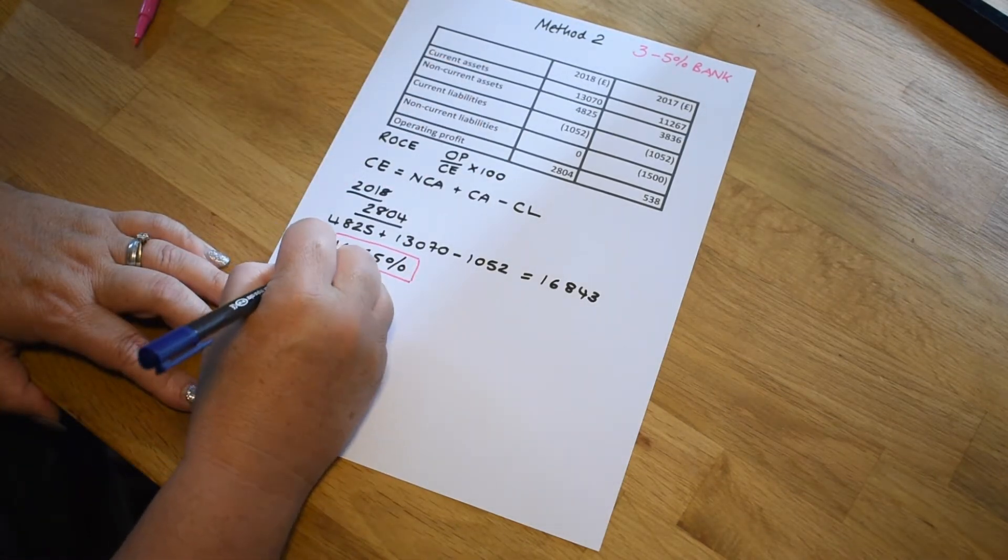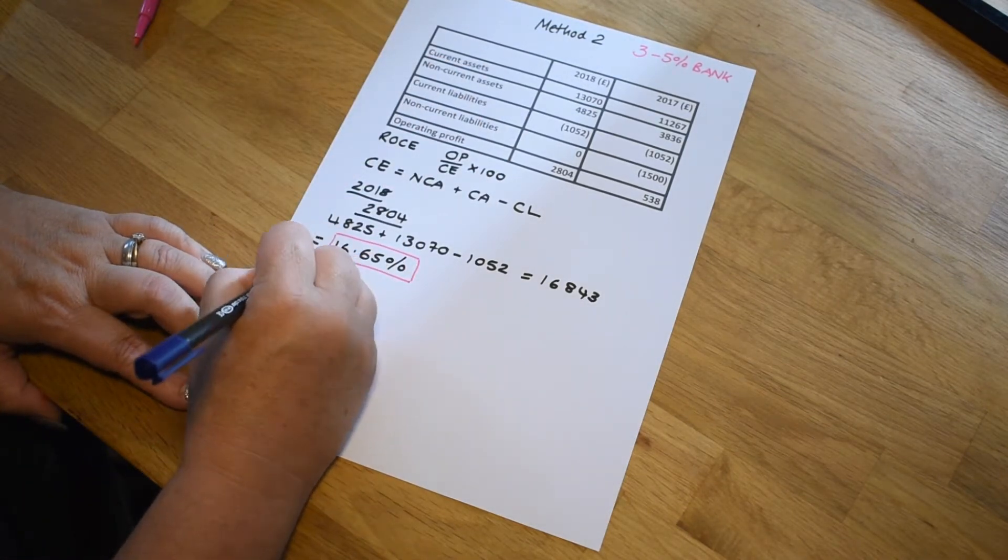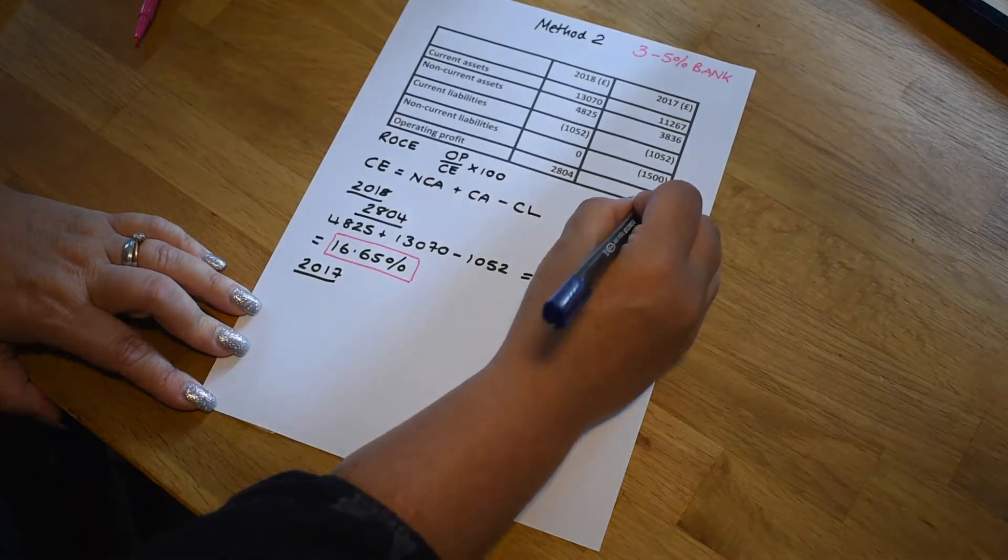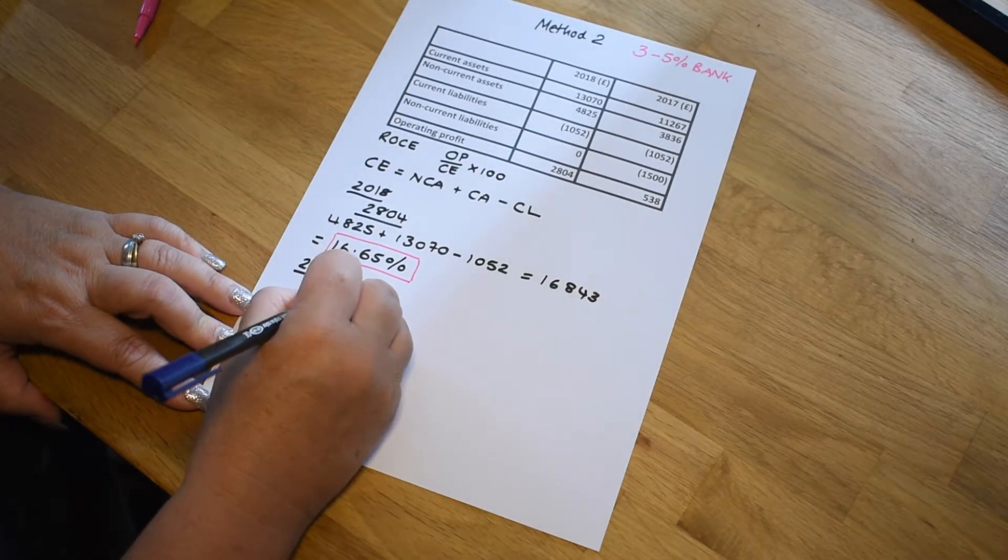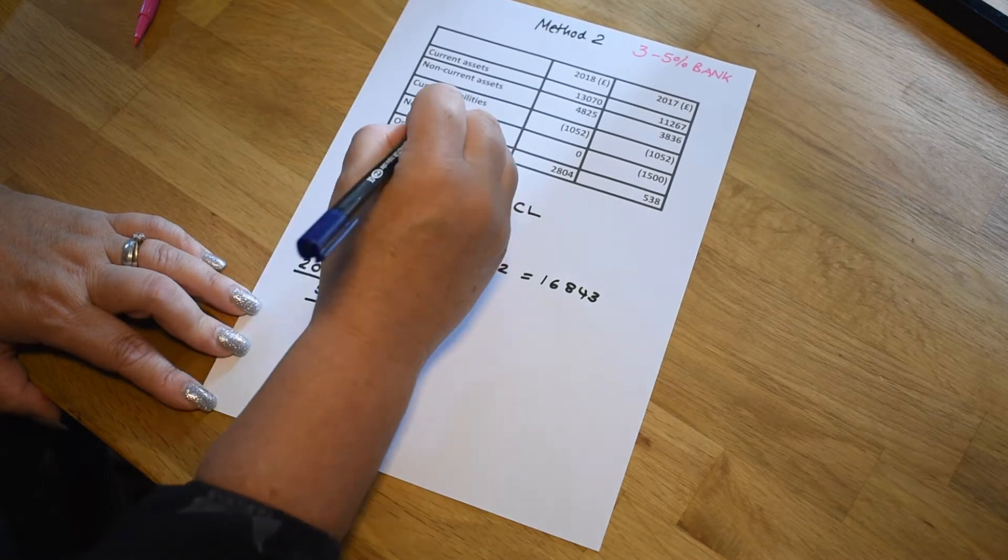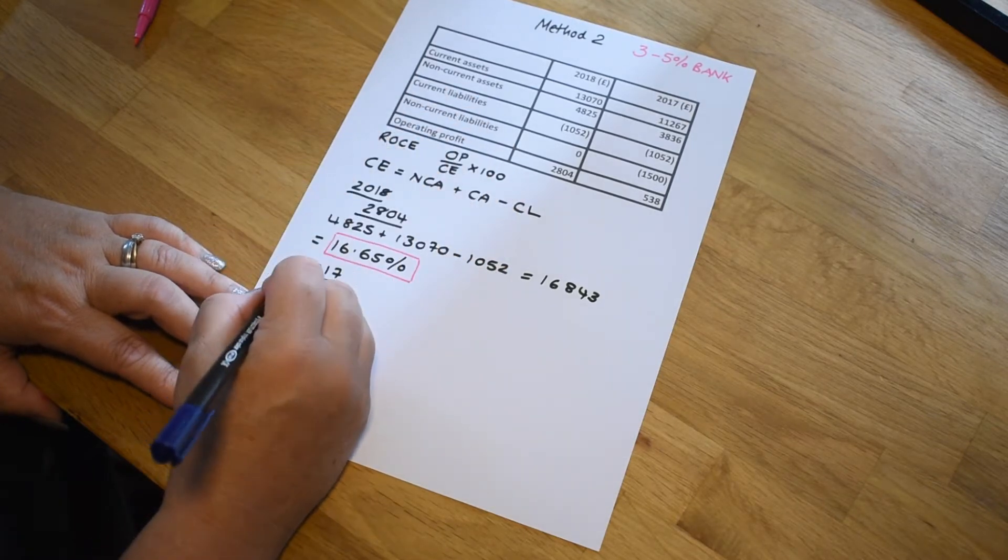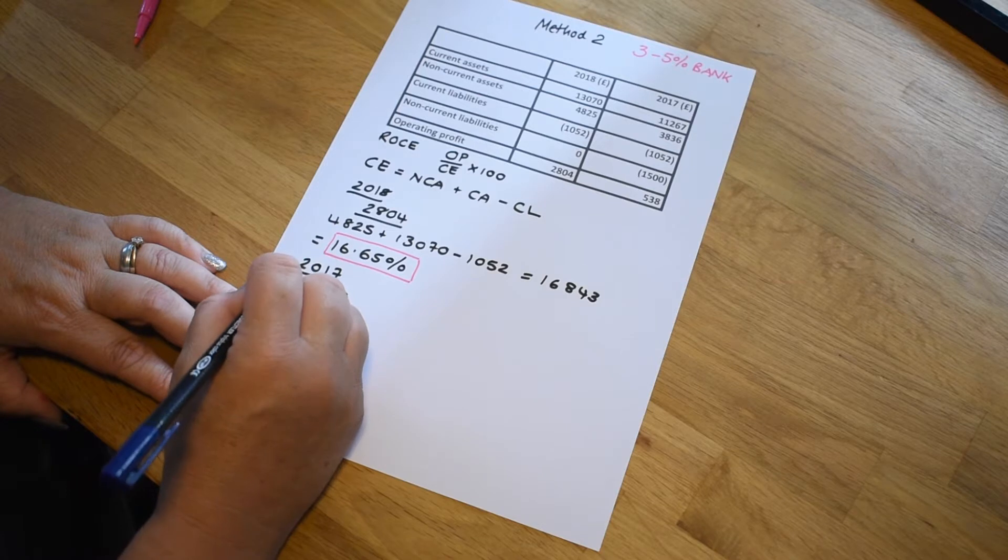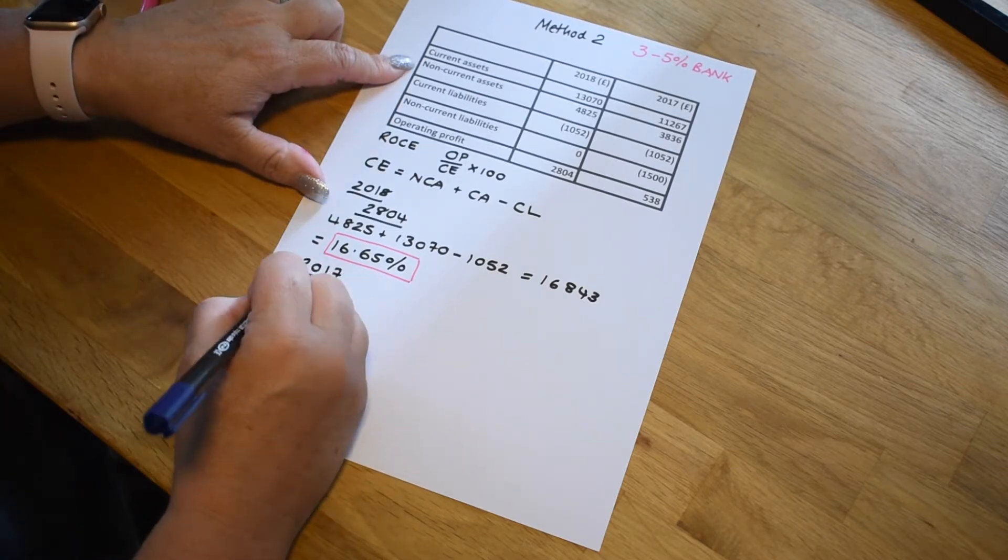And we'll come back to that in a moment because don't forget, we're going to compare that with our bank account. So let's look at the data for 2017. First of all, we'll take the operating profit figure here of 538.